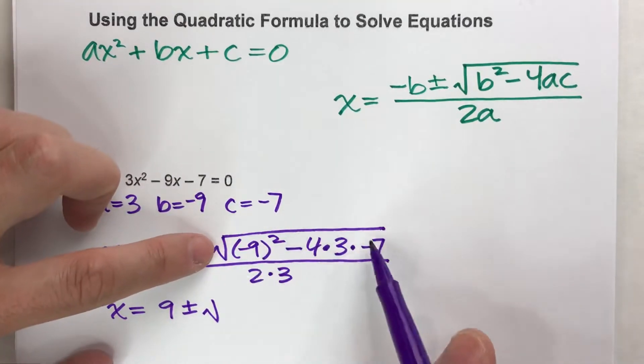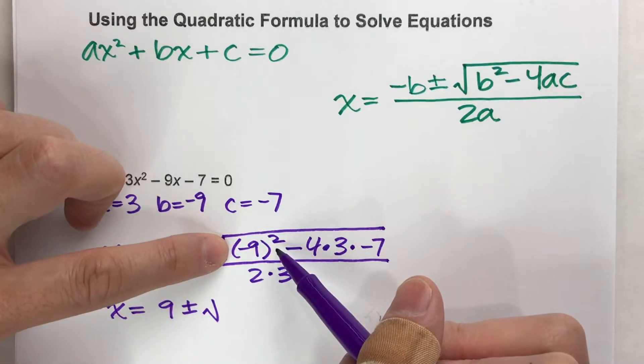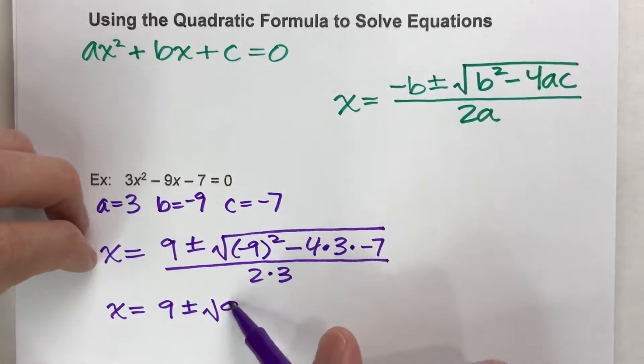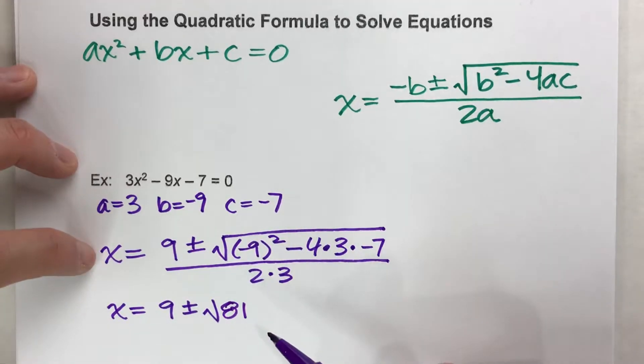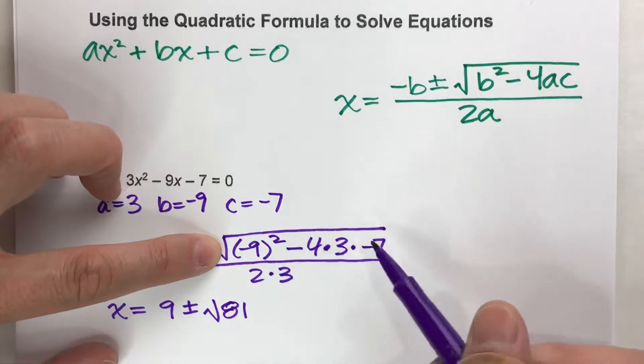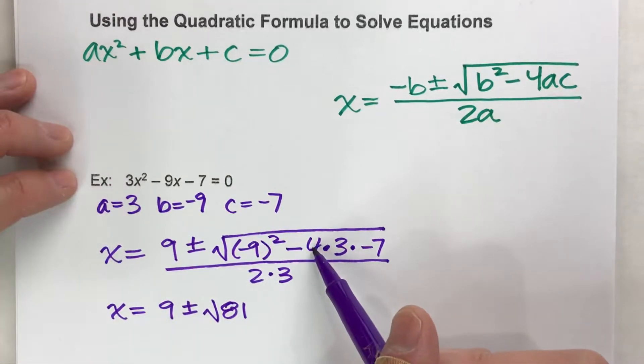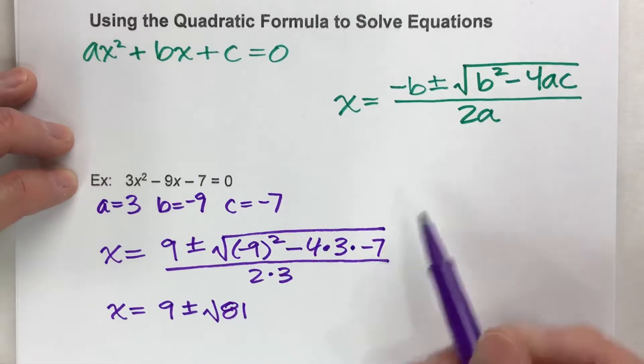Order of operations says, if we're going to simplify the inside of the square root, we've got to do the exponents first. Negative 9 squared is positive 81. After the exponents, before we can subtract, we've got to multiply next.